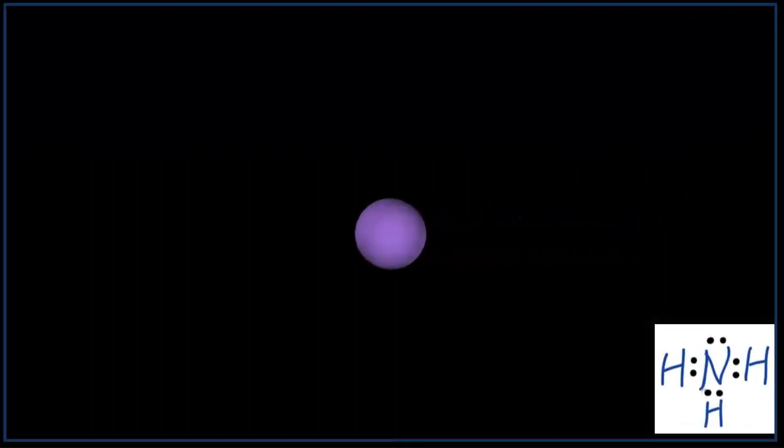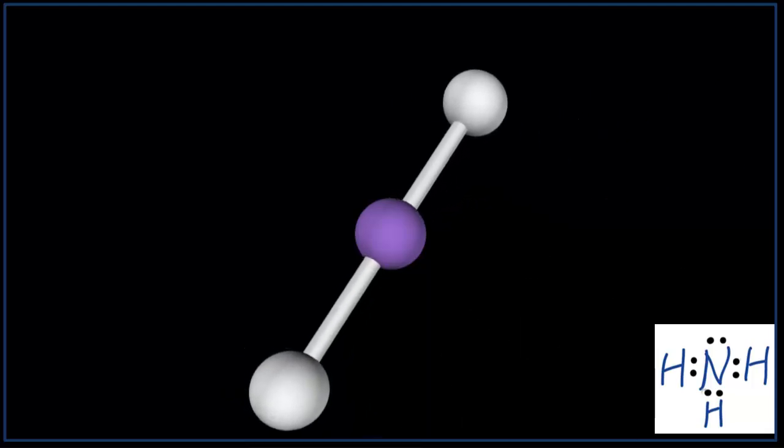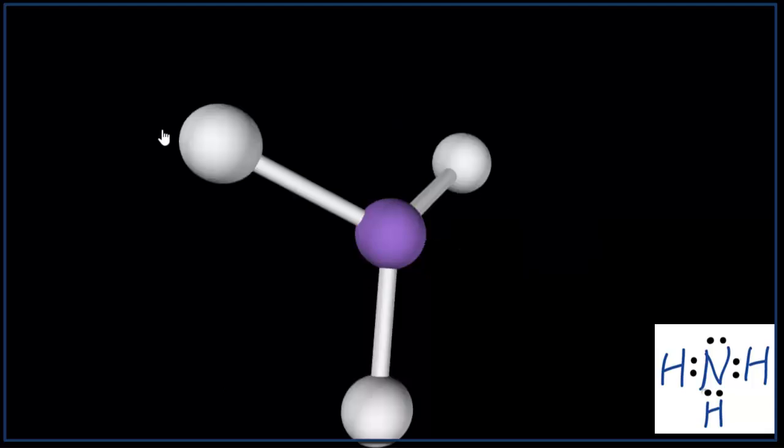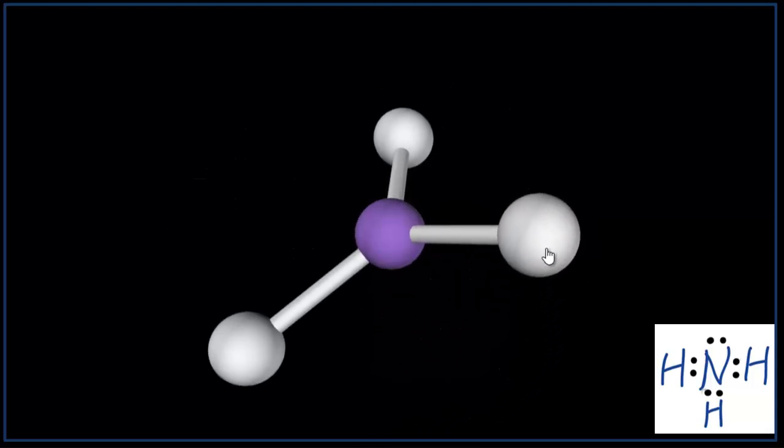We have our nitrogen atom in the middle, and let's add three hydrogen atoms. As we add them, they spread out to be as far away from each other as possible, and we have this structure. When you look at it, it looks like it should be nonpolar. Each of the hydrogens is pulling in an opposite direction, and they should cancel out.